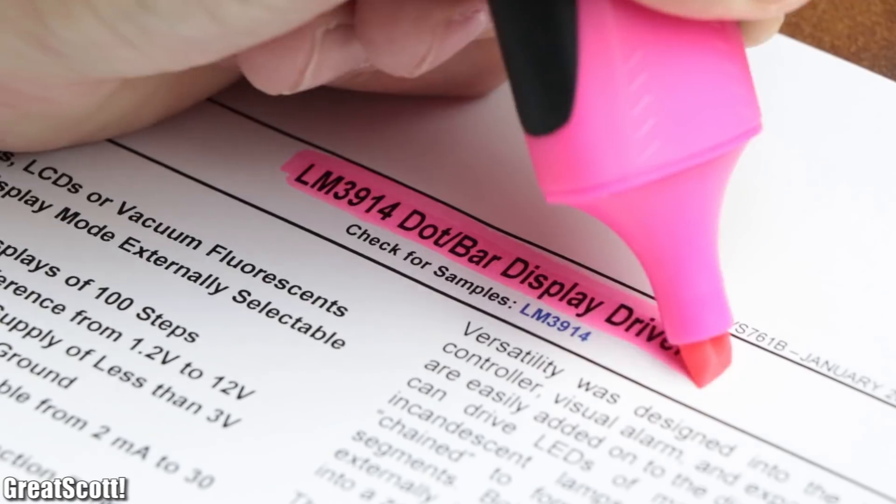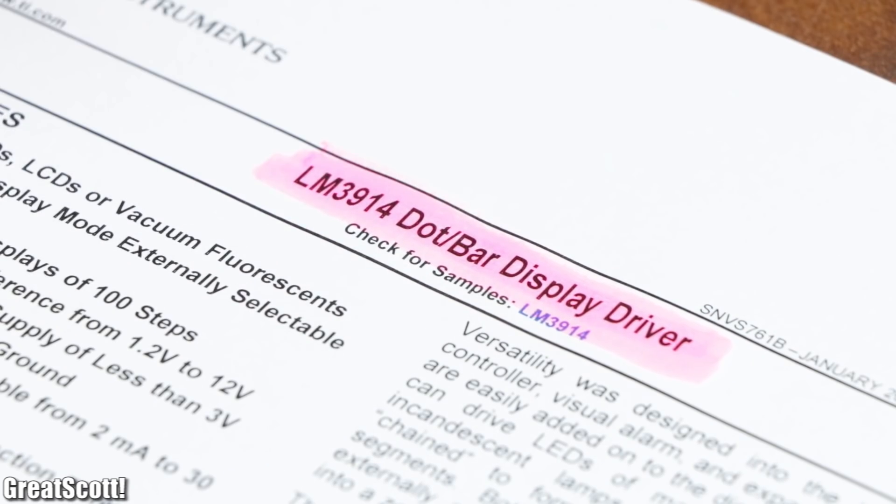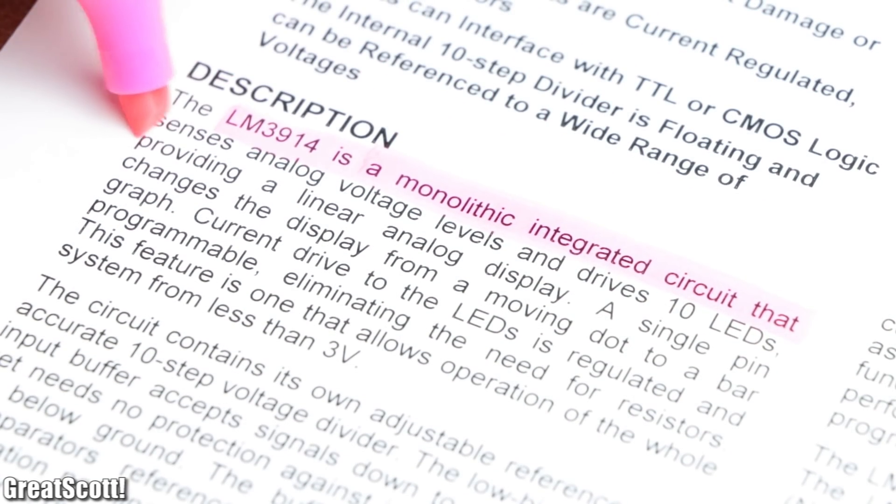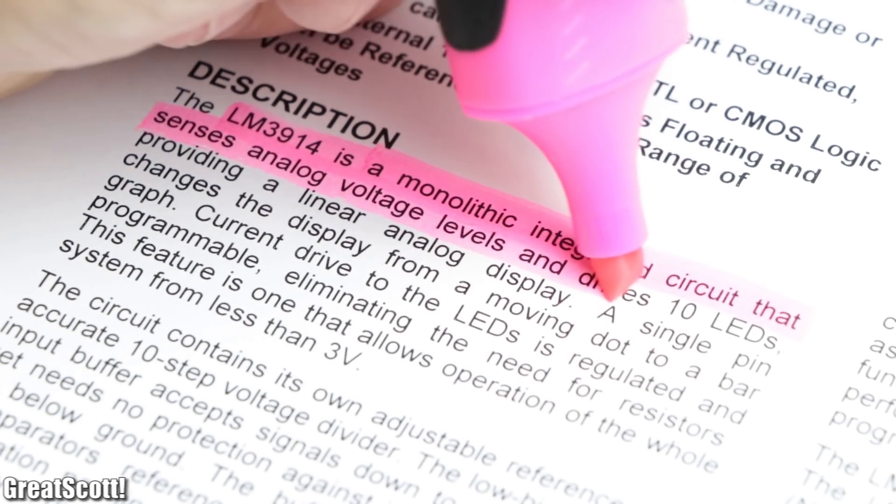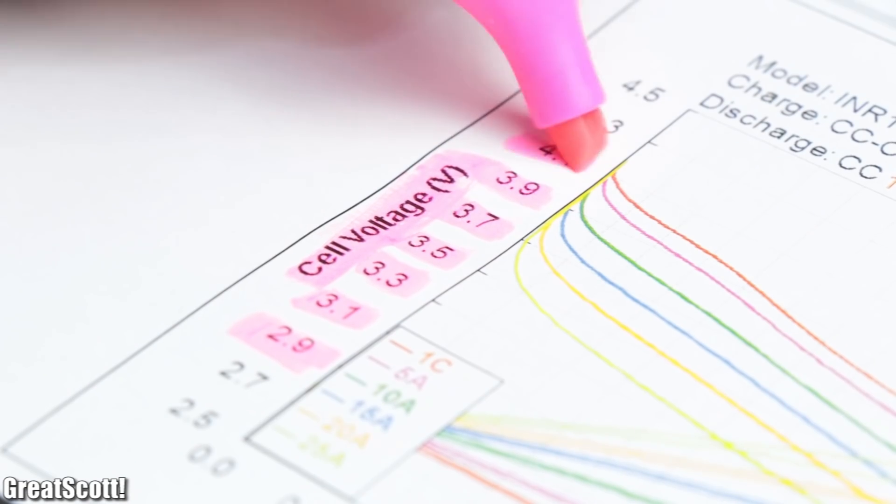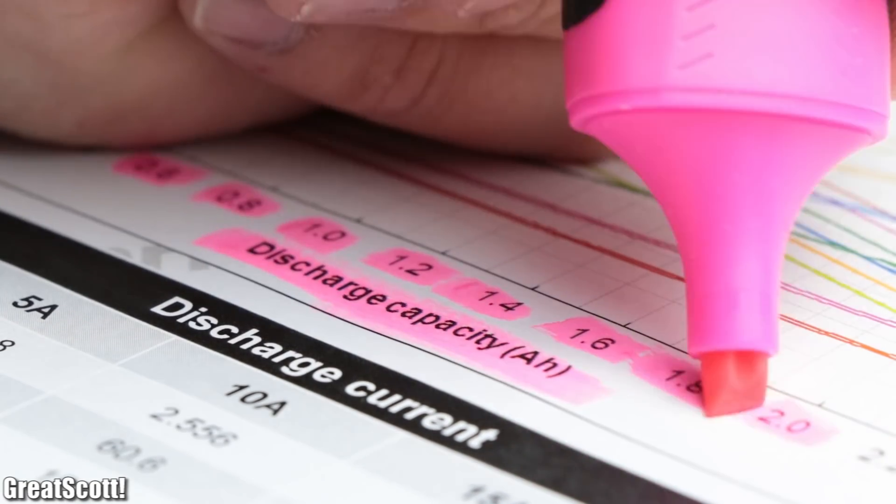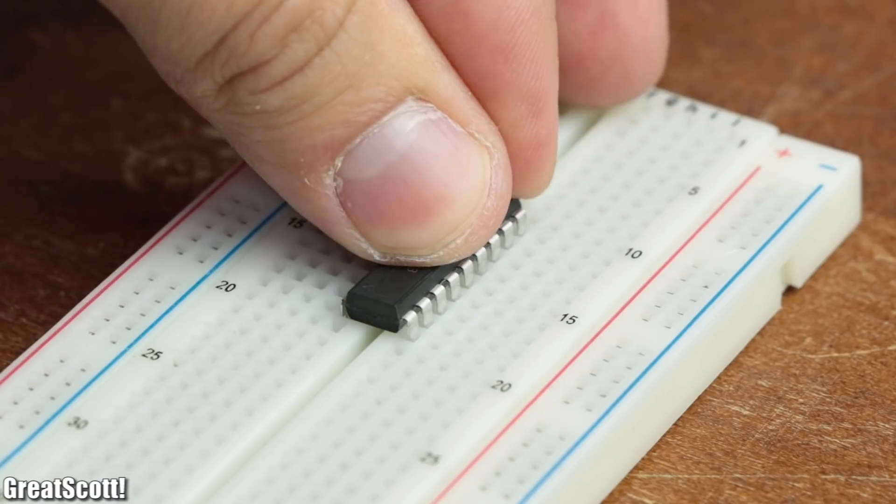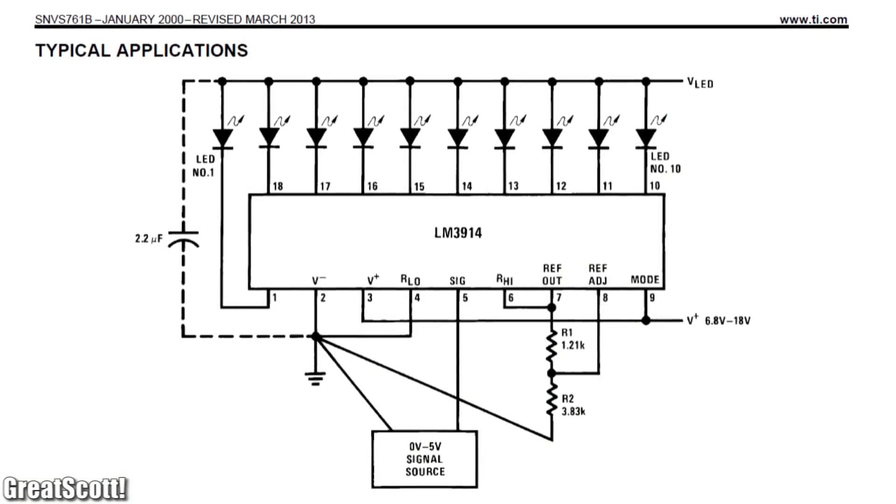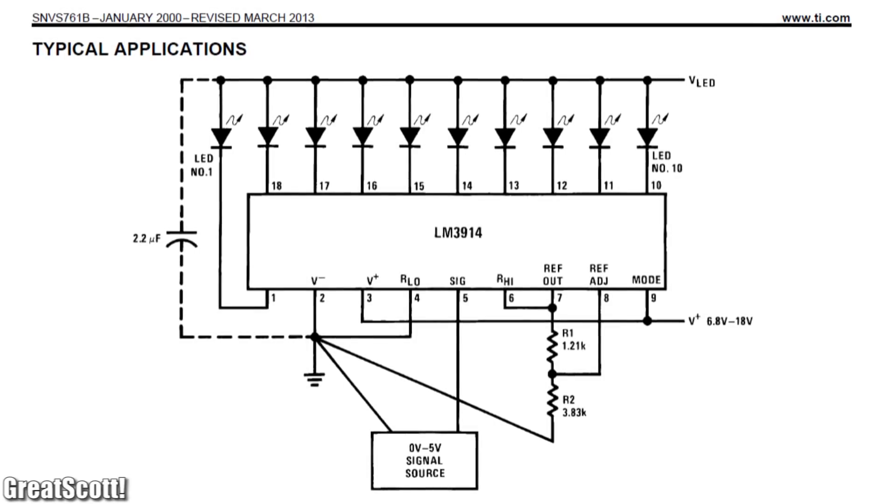According to the datasheet of the LM3914, it is an IC that senses analog voltage levels and drives 10 LEDs accordingly, which is basically just what we need since the voltage of a battery can tell us how much energy it got left. So I positioned the IC on a breadboard and had a closer look at its typical application circuit given by the datasheet.